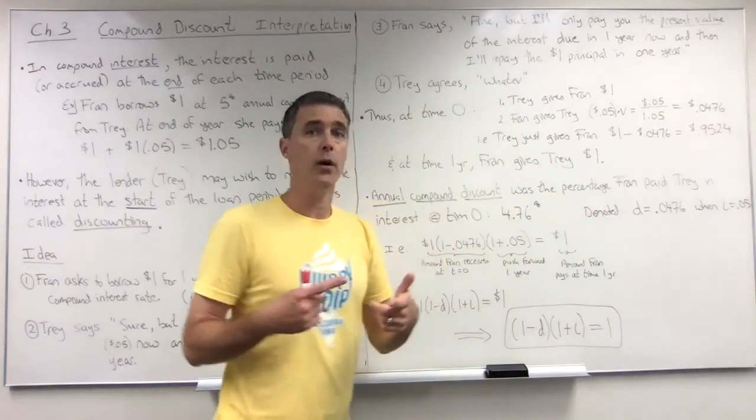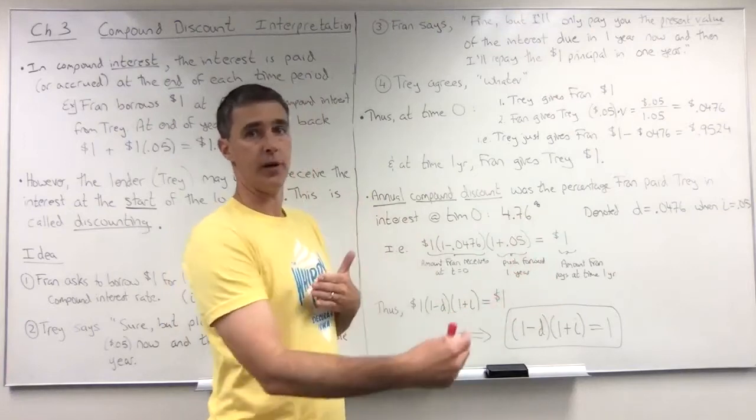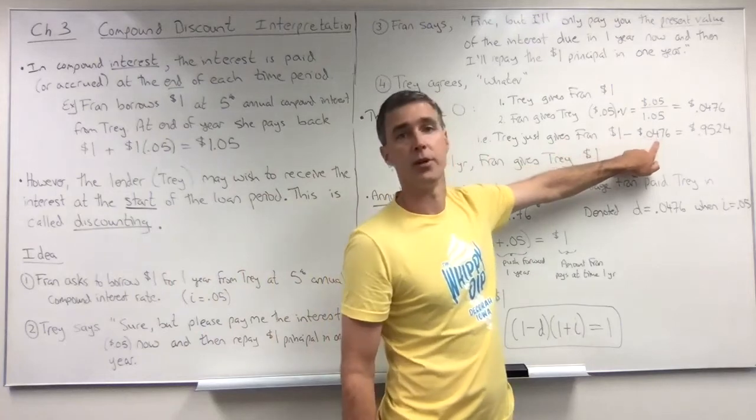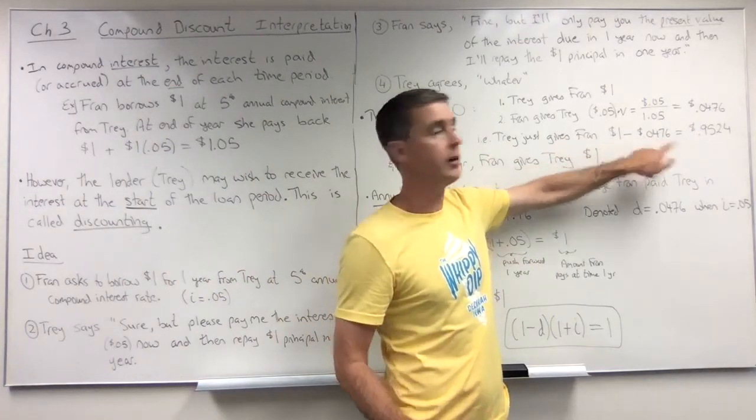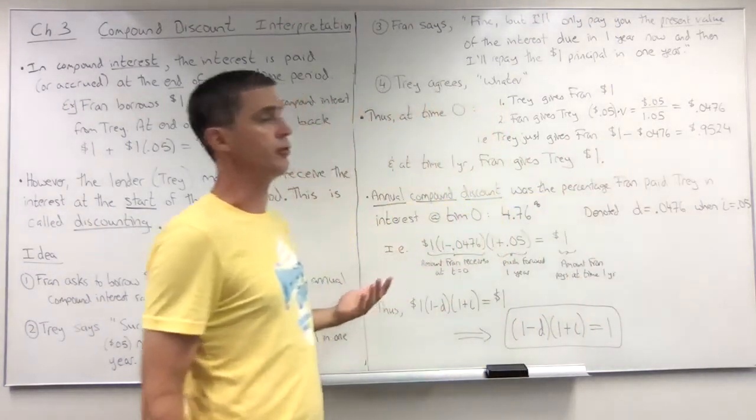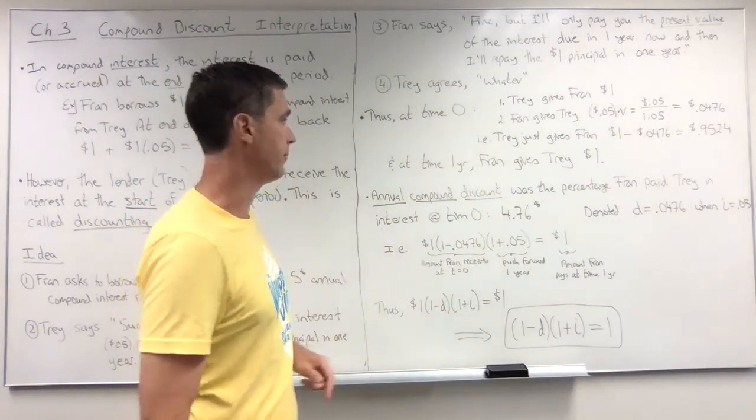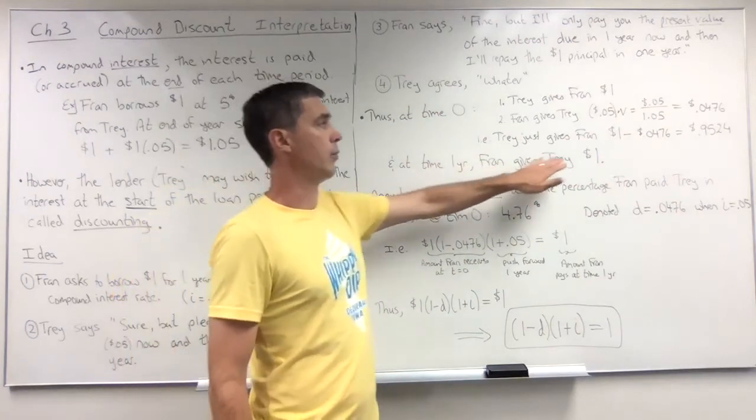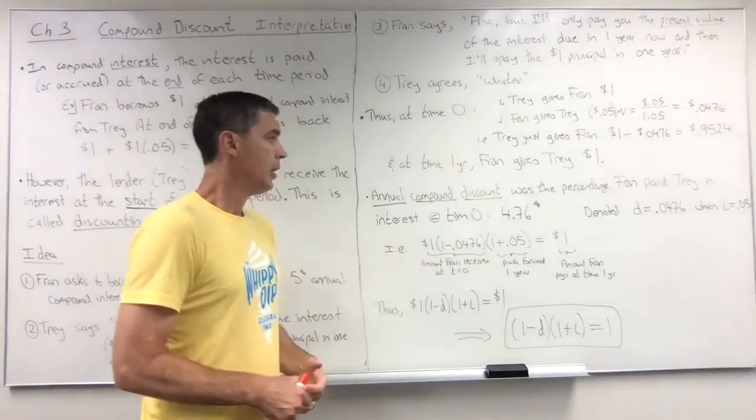Now there's not actually Trey giving Fran money and Fran giving Trey money. Trey would just give Fran the dollar less that four point seven six cents of prepaid interest. So Trey would actually just give Fran ninety five point two four cents, or point nine five two four dollars, at time zero, and then at time one Fran would pay back Trey the full dollar.